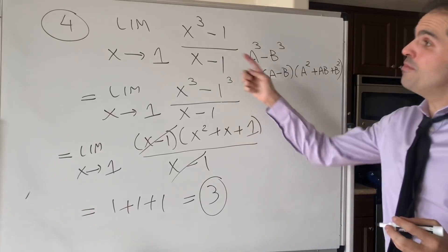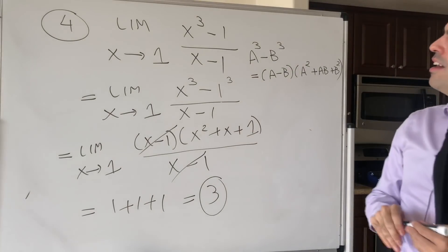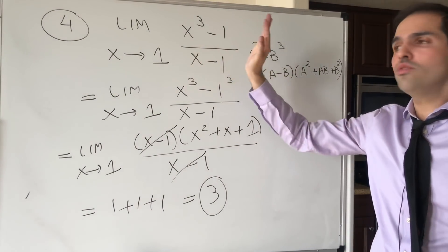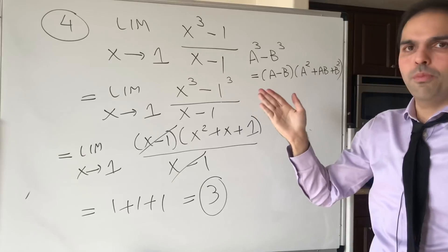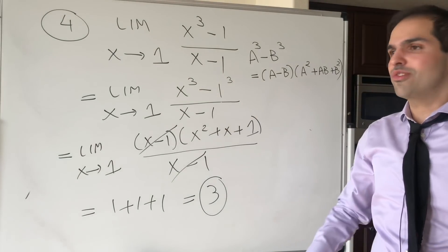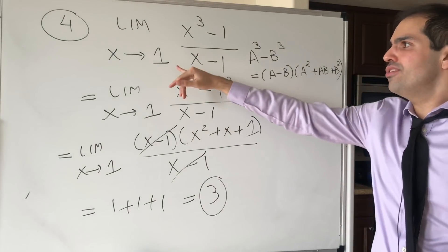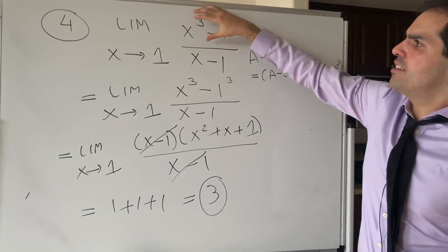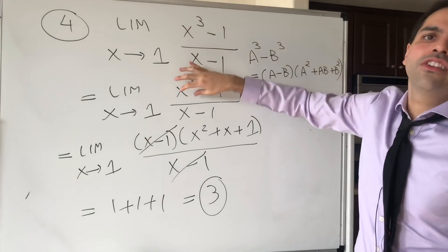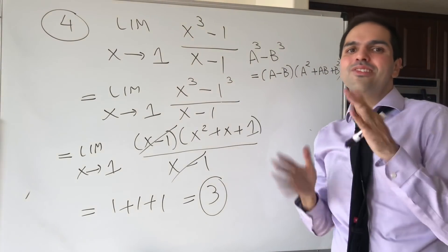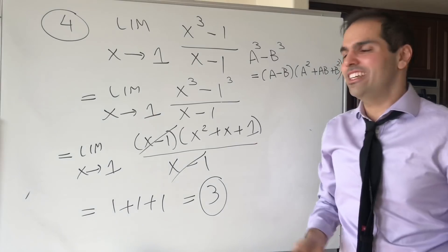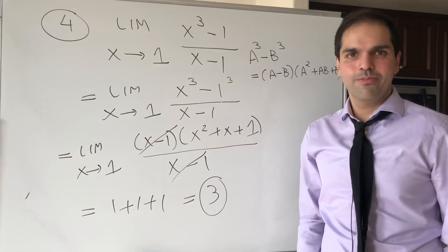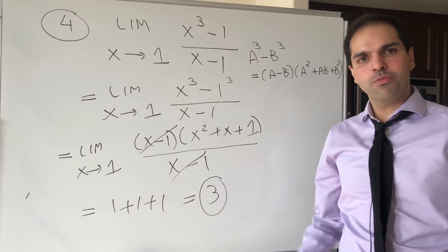An important note: if you're taking a limit at a finite point, it's usually a factoring problem. If you're taking a limit as x goes to infinity, you factor out the highest power. Those are two different techniques, so always be aware of where you are.